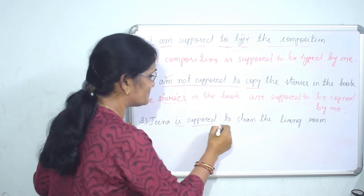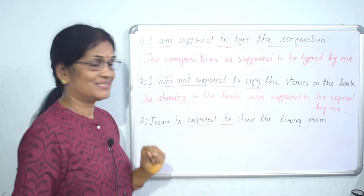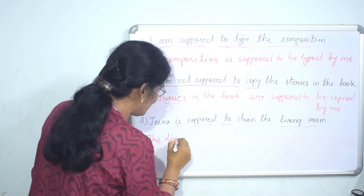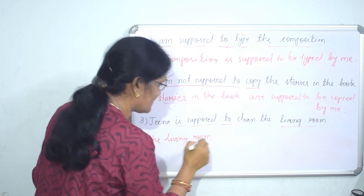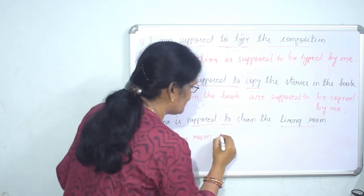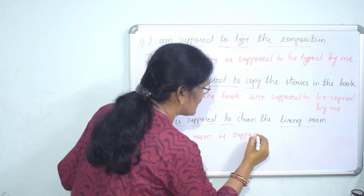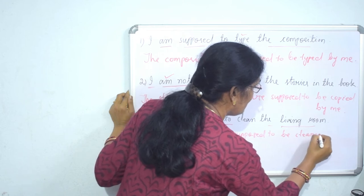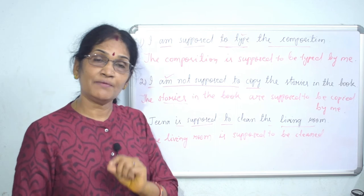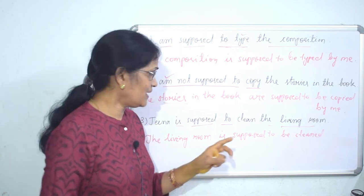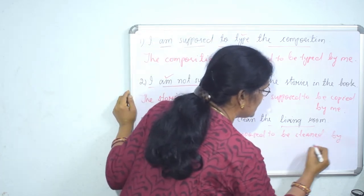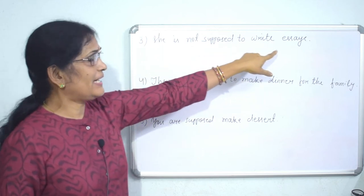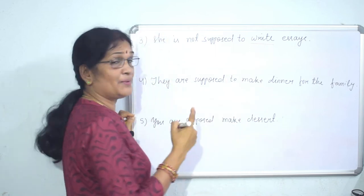Next: 'The living room is supposed to be cleaned.' The verb is 'clean' — clean what? The living room. So the living room will be the subject in the passive structure: 'The living room is supposed to be cleaned.' Remember, in every passive structure there must be one 'be' verb added and the given verb will be in past participle form. Be cleaned by whom? By Jina.